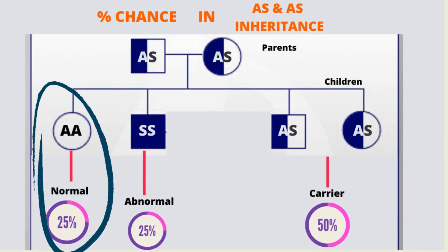What about the second scenario? On the other hand, each of these parents may transfer their normal genes to the child in that particular pregnancy. The risk of that happening is also 25%. So it is possible for that couple to have a child who does not have any S gene and therefore has the AA genotype, and the chance of that happening is 25%.